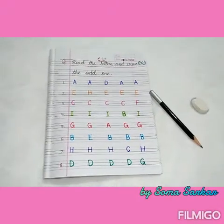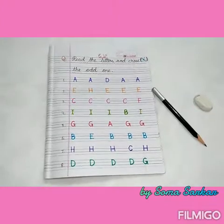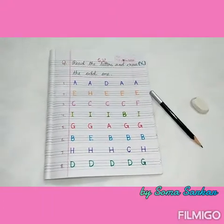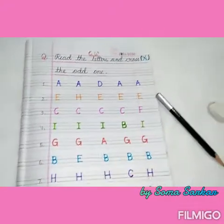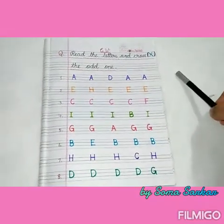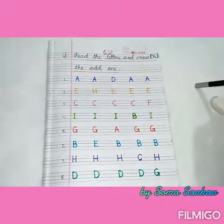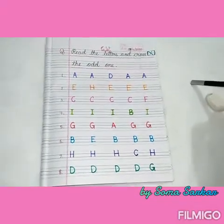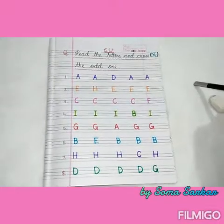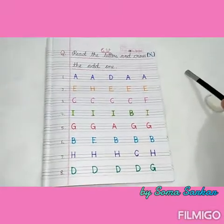Good morning my little champs, happy to see you again. Kids, today we will play an interesting fun game in our English notebook. Look at this kids — colorful letters. Mama or papa will write the date, CW, and these colorful letters for you. You have to play the game and enjoy it. Are you feeling excited? Yes, ma'am also. So kids, let's start the game.